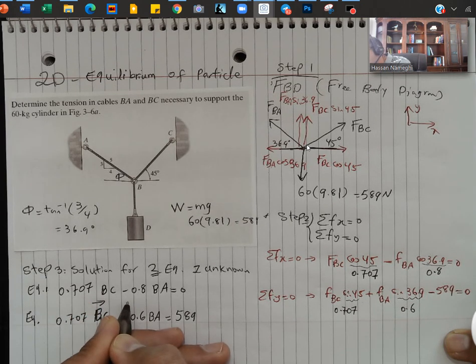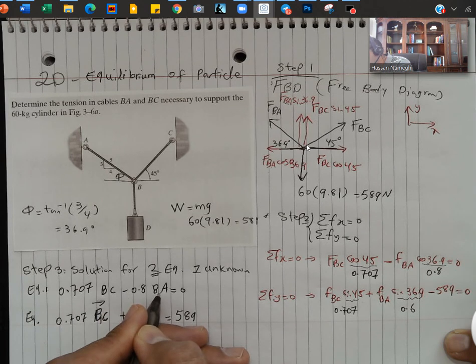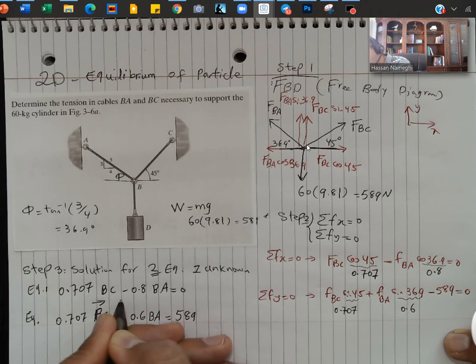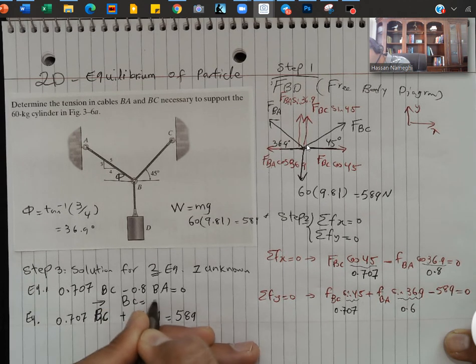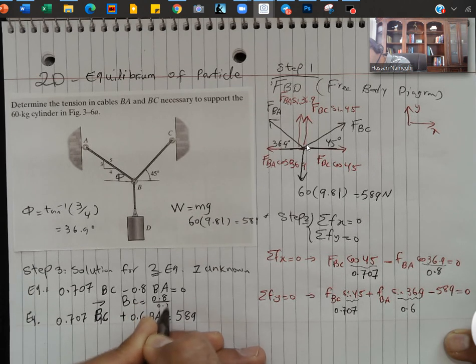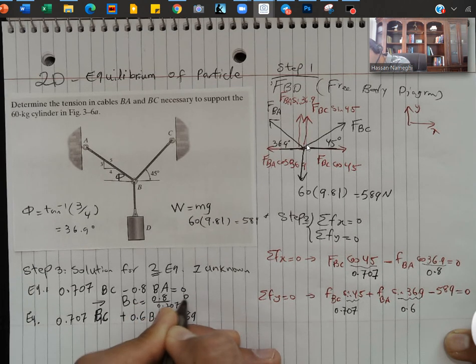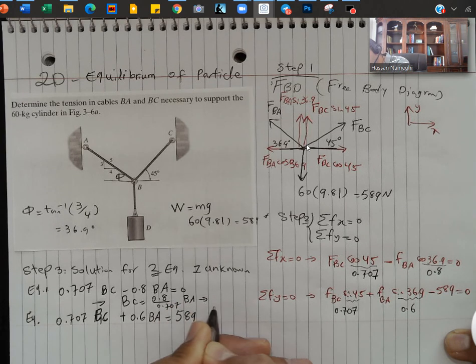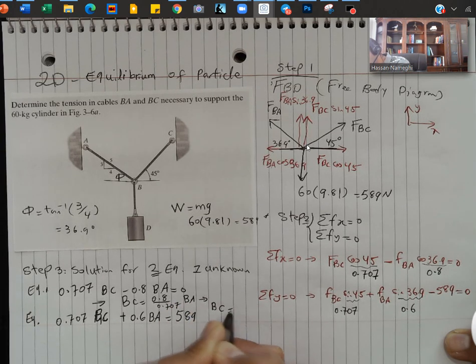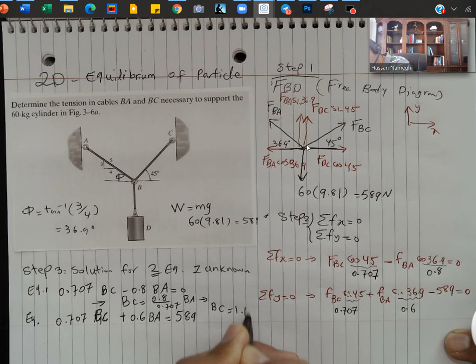Again, I can bring this to the other side. I can simplify it as BC is equal to 0.8 divided by 0.707 BA. If I simplify it more, I'm going to get BC is equal to 1.13 BA.